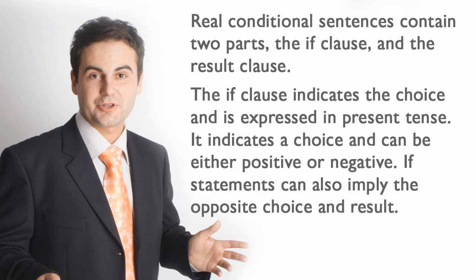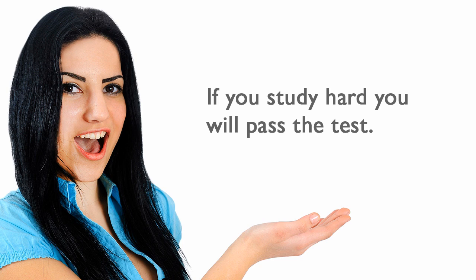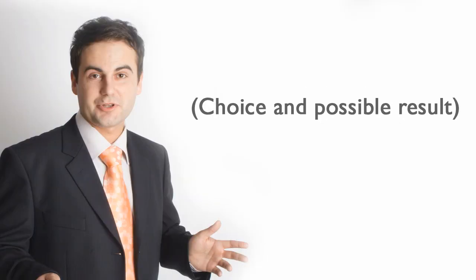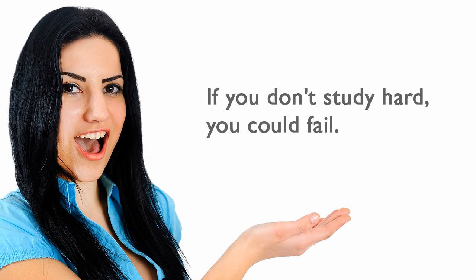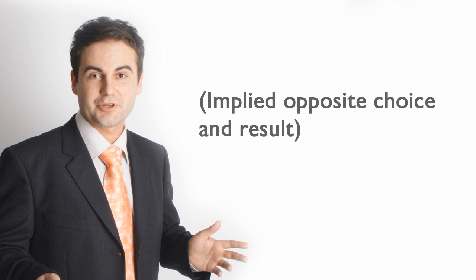Real conditional sentences contain two parts: the IF clause and the RESULT clause. The IF clause indicates the choice and is expressed in present tense. It can be either positive or negative. IF statements can also imply the opposite choice and result. For example: 'If you study hard, you will pass the test' — choice and possible result. 'If you don't study hard, you could fail' — implied opposite choice and result.